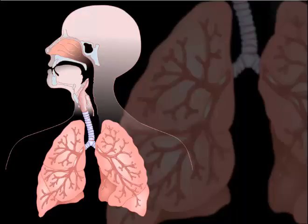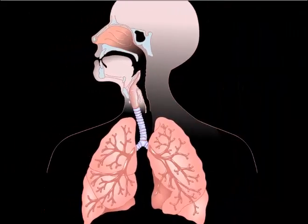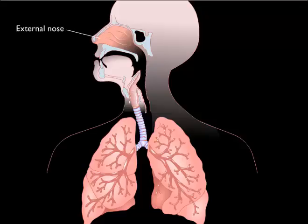The respiratory system functions to move air into and out of the lungs and provides a surface for gas exchange. The upper respiratory tract consists of the external nose, nasal cavity, and pharynx.